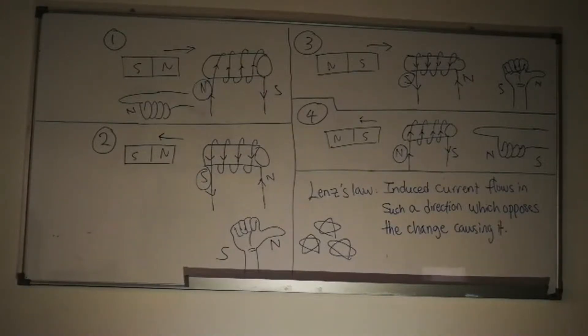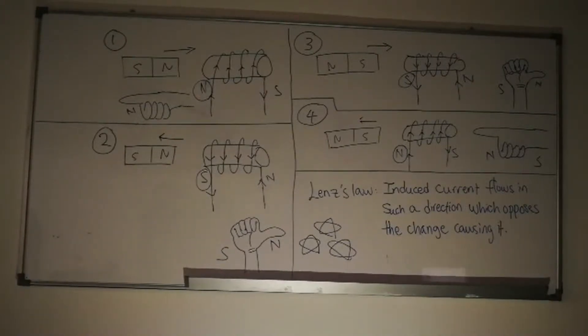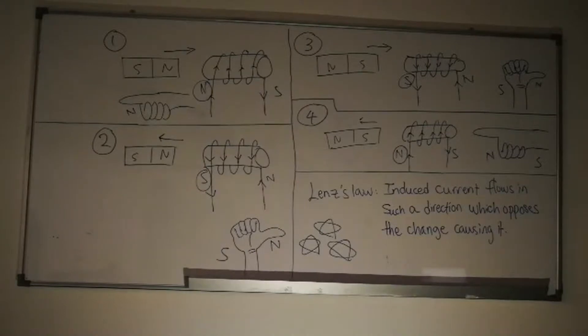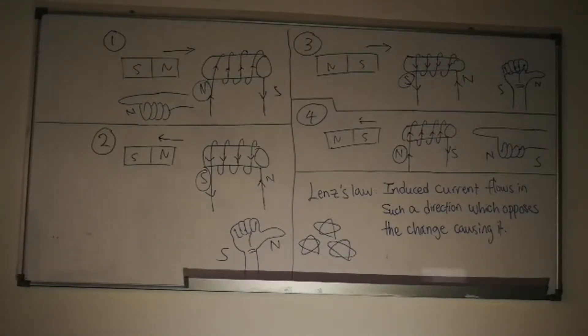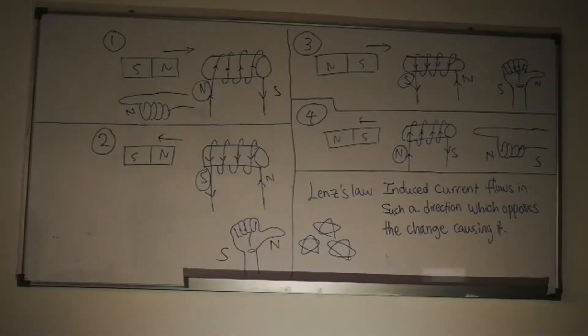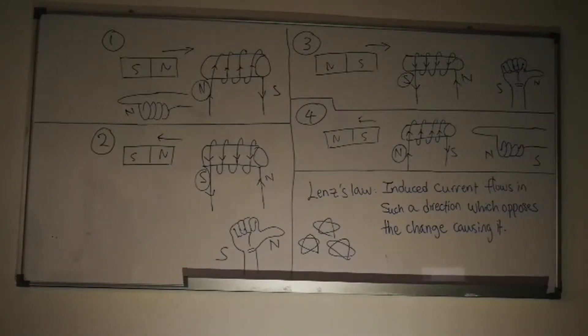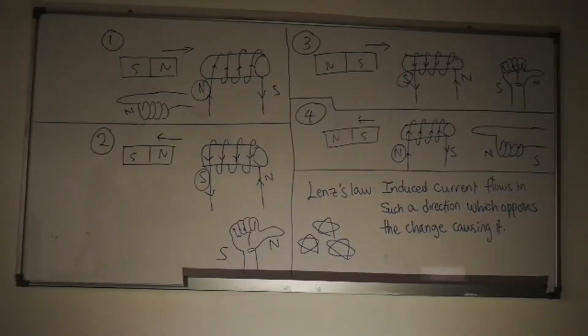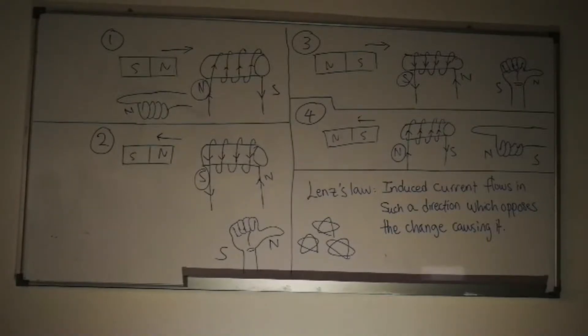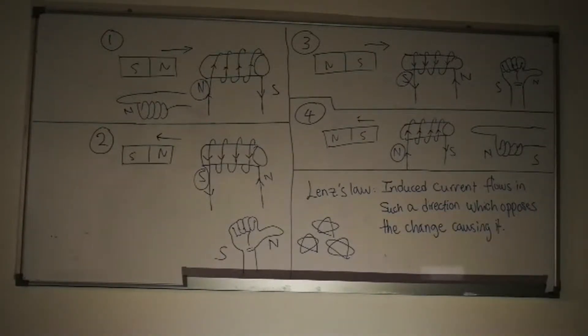In the third diagram, the magnet is moved towards the solenoid. This time, the south pole of the magnet is moved towards the solenoid. The magnetic flux in the solenoid increases. Therefore, the same pole is induced at the end of the solenoid, which is closest to the magnet, to oppose the change.